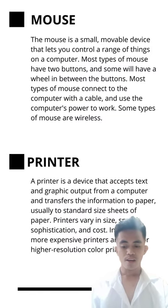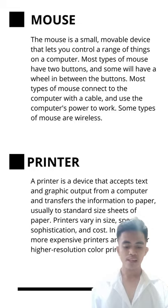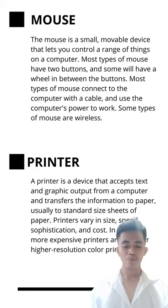Mouse. A mouse is a small movable device that lets you control a range of things on a computer. Most types of mouse have two buttons, and some will have a wheel in between the buttons. Most types of mouse connect to a computer with a cable and use the computer's power to work.